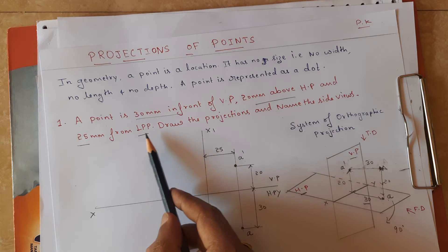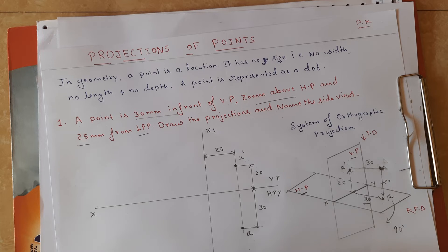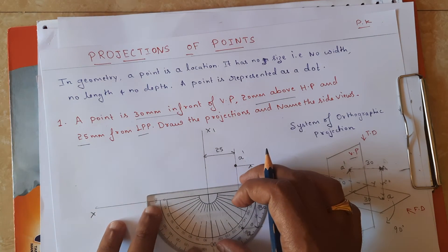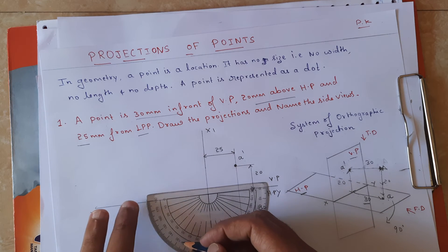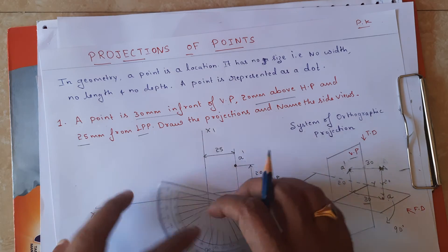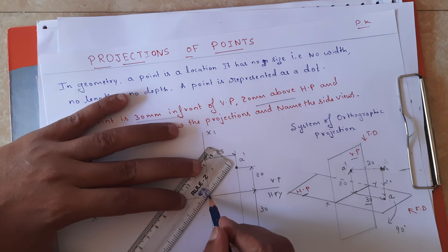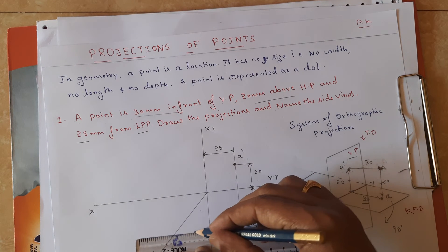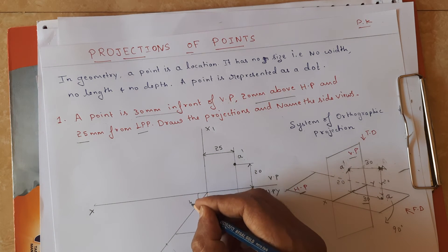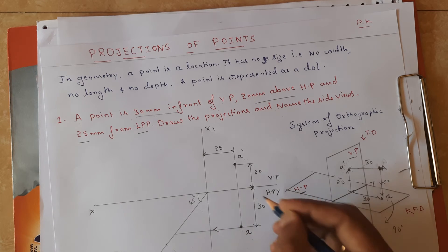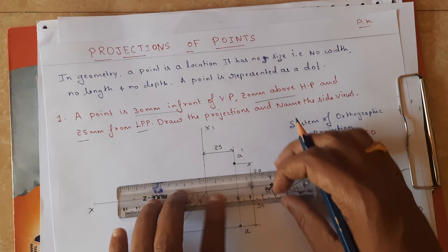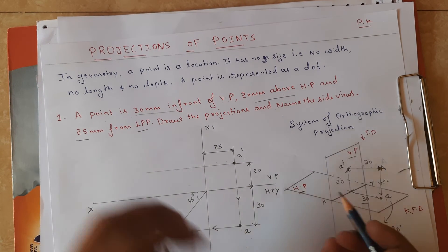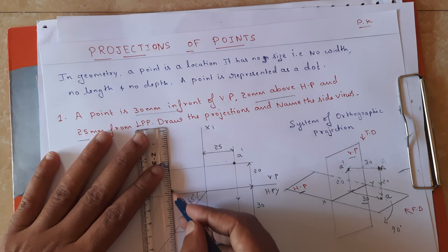The front view and top view are done. Now I need to draw the left profile view. I have drawn the X1Y1 line, and now from the intersection point I am going to draw a line at an angle of 45 degrees. From a, I am going to draw a horizontal projection until it touches this 45-degree line. And also I am going to draw a horizontal projection from a dash, then from that point draw a vertical line upwards until it touches the locus of a dash.